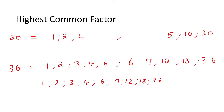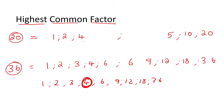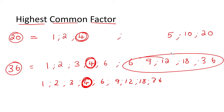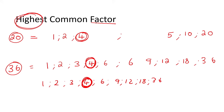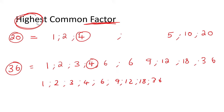Now listen carefully — the highest common factor. When they say highest common factor, they mean: what is the highest factor that is in both 20 and 36? Looking carefully, it looks like it'll be the number 4. The number 4 is the biggest number found in both — there's a 4 here and a 4 here. Unfortunately there isn't a 5, 10 or 20 in 36. So the highest number in both is 4. That is what we call the highest common factor.